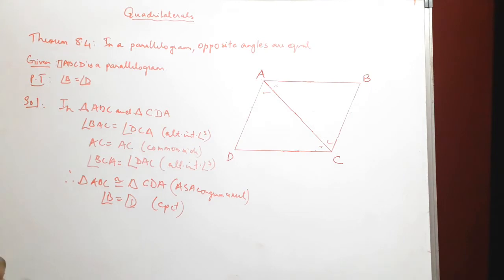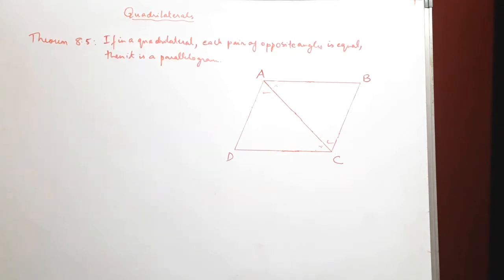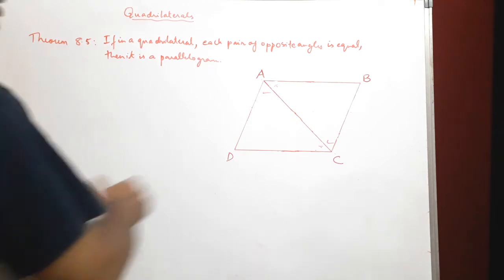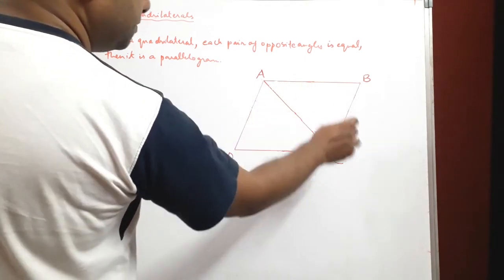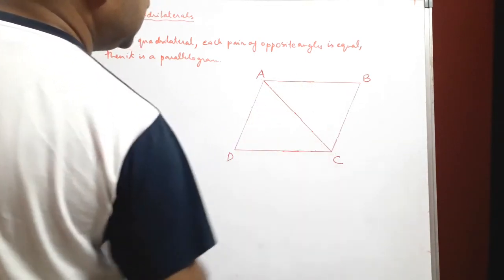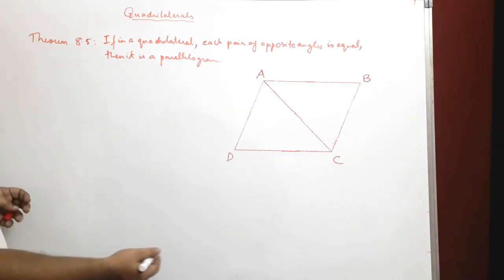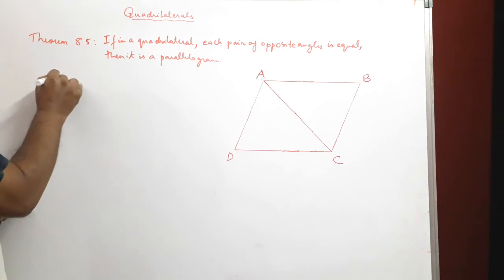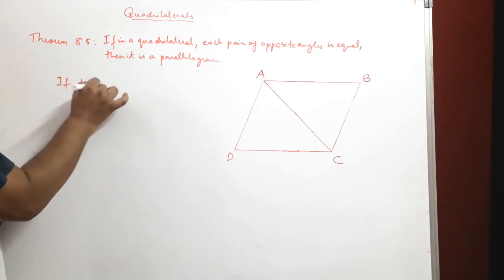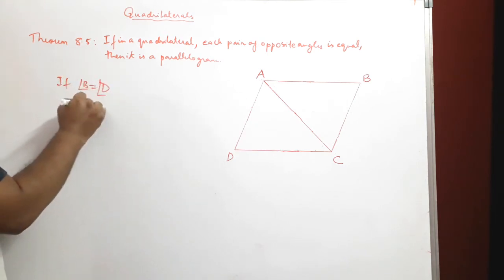Once we have proved that these two triangles are congruent, we can say angle B is equal to angle D by CPCT. That's how we prove theorem 8.4. The next theorem 8.5 says that if in a quadrilateral each pair of opposite angles is equal, then it is a parallelogram.